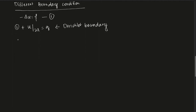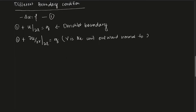Now, if instead you give the condition del u / del gamma at the boundary equals g, where gamma is the unit outward normal to del omega, then this sort of boundary condition is called the Neumann condition — a Neumann boundary condition.